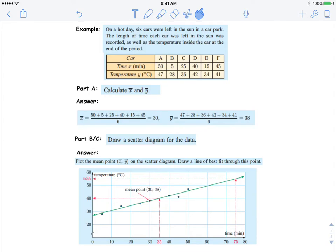Here's an example of the line of best fit. So on a hot day, six cars were left in the sun. The length of time each car was left in the sun was recorded, as well as the temperature inside the car.